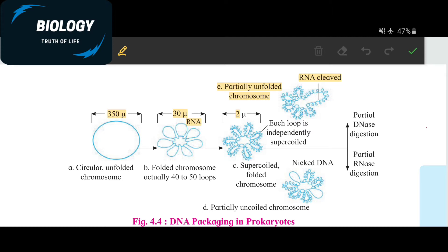First of all, the first scientist is Griffith. He did an experiment on mice and bacteria. The bacteria is Streptococcus pneumoniae, which causes pneumonia. But he could not prove which is a genetic material — protein, DNA, or RNA.